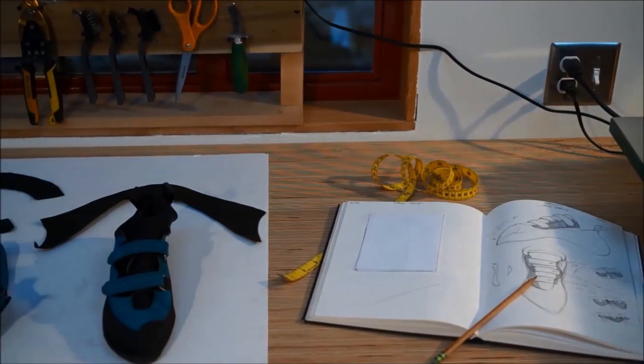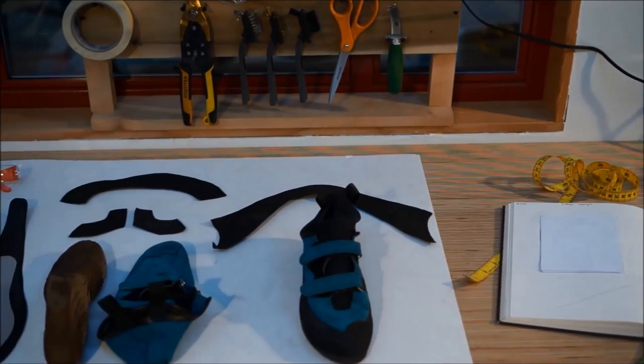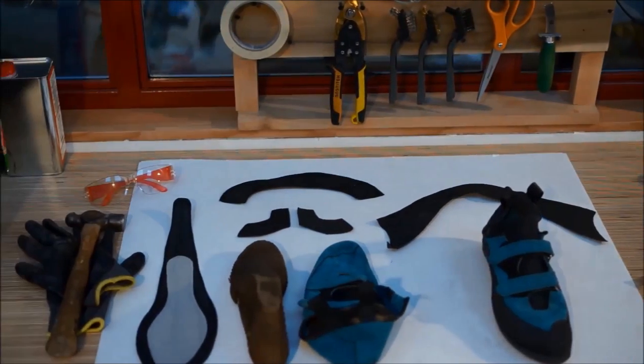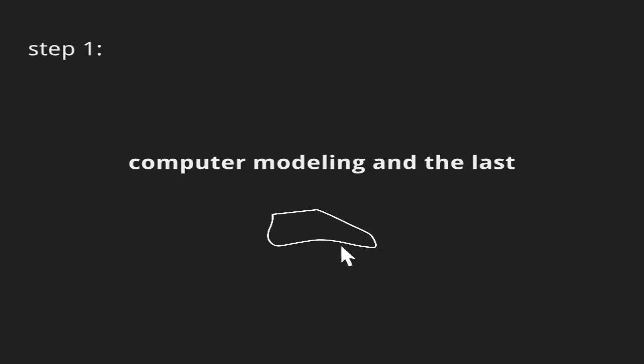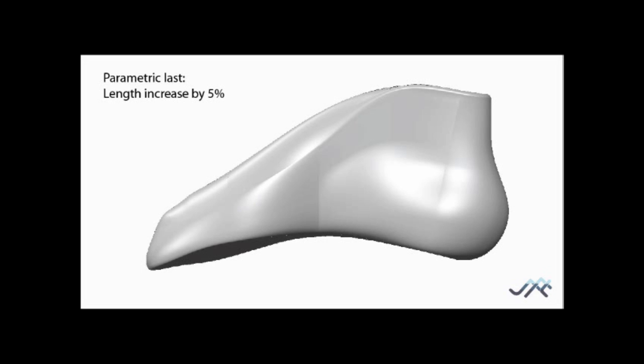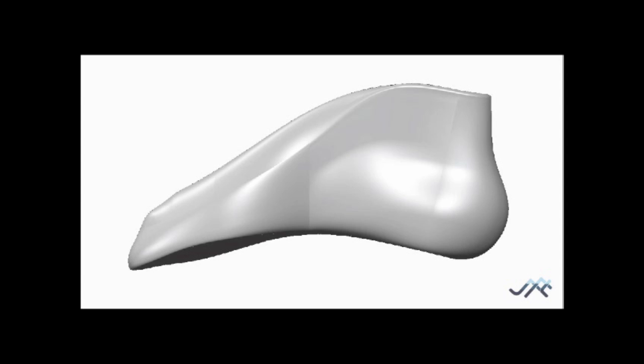SFT climbing uses digital manufacturing to bring down the cost of custom shoes. All shoes start with lasts, the form that a shoe is built on. SFT shoes start with a computer-modeled last whose proportions are changed to match each climber's foot dimensions.